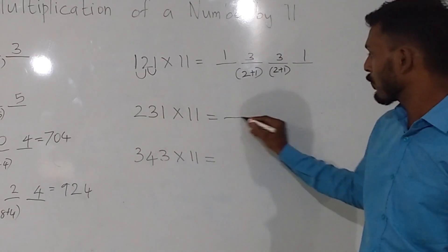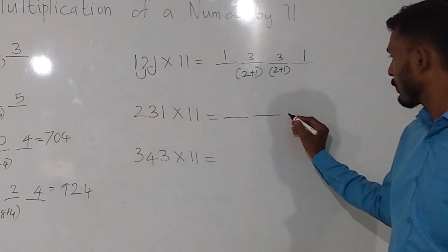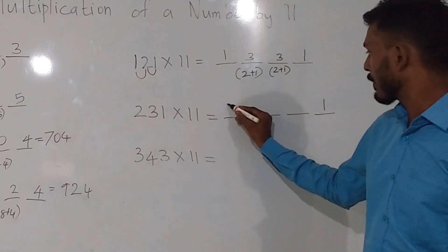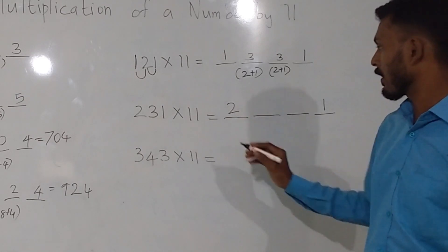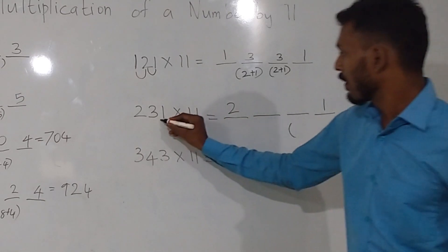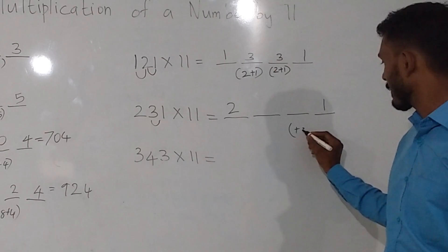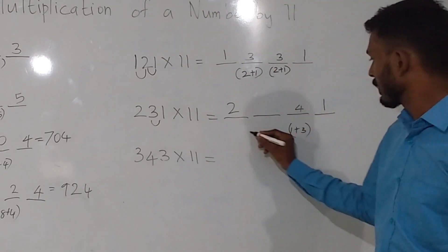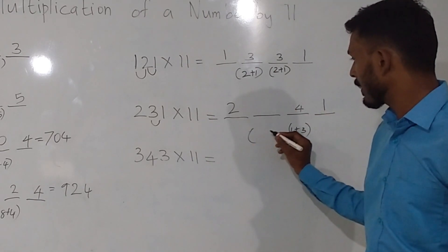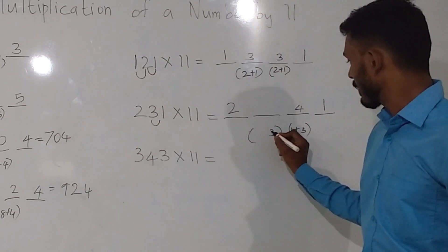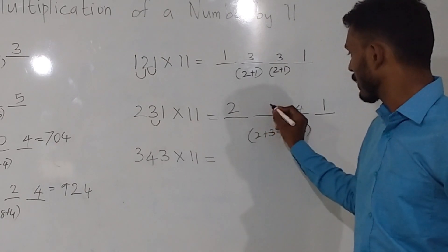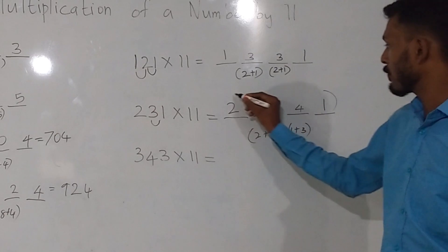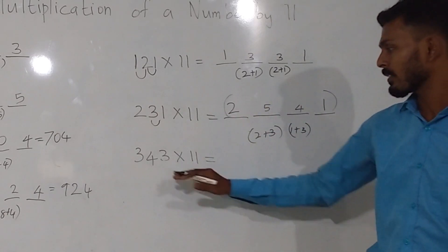If we look at this, we will add 4. First, in the first one, we will add 2. This is 1 plus 3, that is 4. Then 3 plus 2, this is 5. The answer is 2, 5, 4, 1. If we look at this number, 3, 4, 3 and 11 — that is 4 dash.